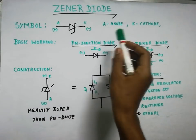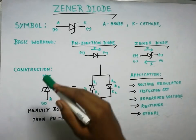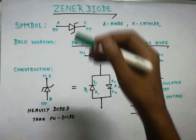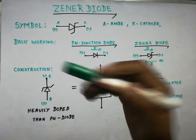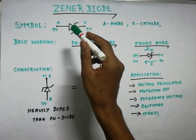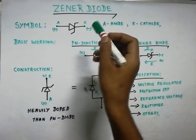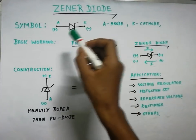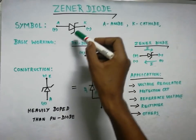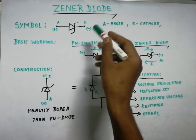The Zener Diode is a special diode. Its basic symbol is a little different from the normal diode. The extra part is two lines on the cathode side — that is the difference.